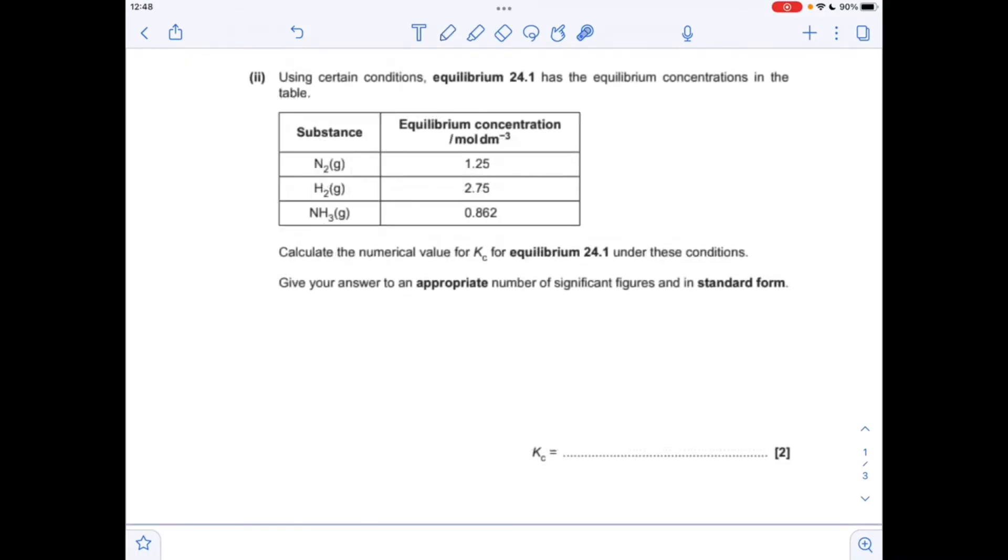So moving on to the second part, to calculate KC we're going to need the KC expression. So that's the equilibrium concentration of the product, raised to the power 2 because it's balanced with the 2 in the equation, over the equilibrium concentrations of the reactants, and again balancing numbers become powers.